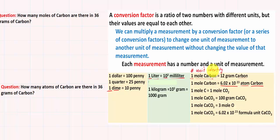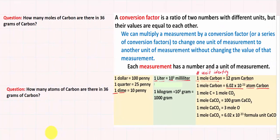Let's try one problem together. We have: how many moles of carbon are there in 36 grams of carbon? So what is our given? Our given is how much we have. Notice how I underline the number, the unit, as well as the identity of the substance. Our given is 36 grams of carbon.